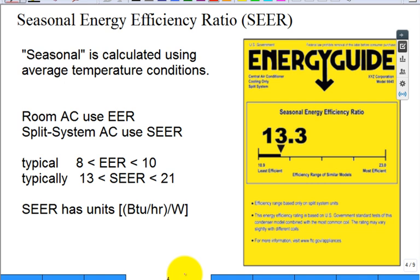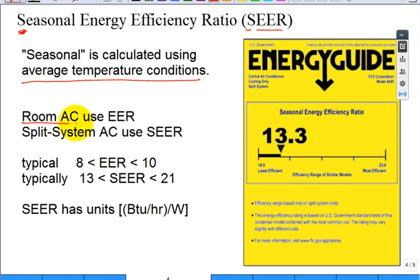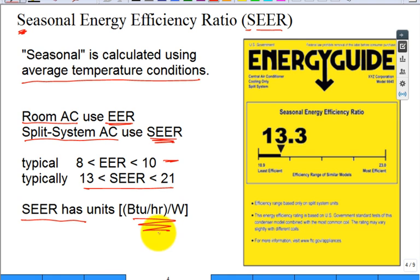Once you have EER down, you find out that EER is really used for room air conditioners and window units. But for the split system for your apartment or house, they use the SEER — Seasonal Energy Efficiency Ratio. All they do is account for temperature conditions across the season, not a fixed condition. The EER and SEER are very close in numeric value but slightly different in definition because it's seasonal. Room air conditioners quote EER; split systems for homes and apartments report SEER, which is typically much higher.